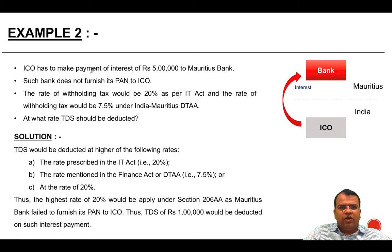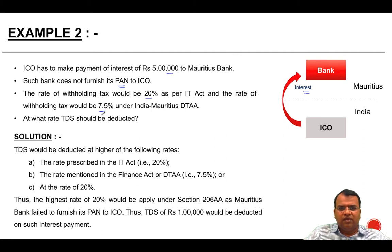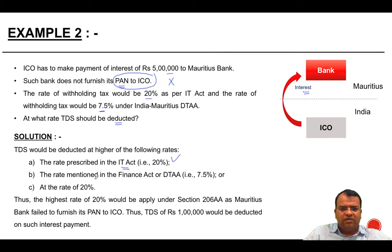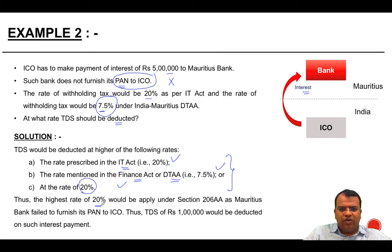Another example: ICO has made a payment of interest of Rs. 5 lakh to a Mauritius bank. Such bank does not furnish its PAN to ICO. The rate of withholding is 20% as per the IT Act, and the rate of withholding is 7.5% under the India-Mauritius treaty. At what rate should the tax be deducted? The rate prescribed in the IT Act is 20%; the rate under DTAA is 7.5%; and the floor is 20%. The highest is 20%, so 20% will apply as the Mauritius bank has failed to furnish its PAN. Thus TDS of Rs. 1 lakh would be deducted on such interest payment.